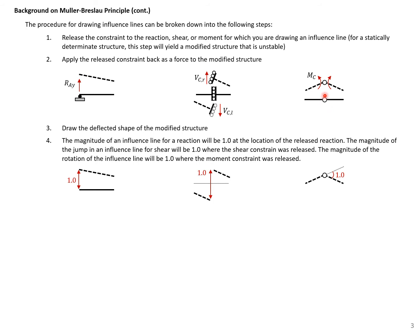For a moment, release the moment restraint by adding a hinge, then add the moment back to the structure. Next, draw the deflected shape of the modified structure after applying back the released constraint. The magnitude of the influence line for a reaction is 1.0 at the location of the released reaction. The jump in the shear diagram is 1.0 when released, and the total rotation at the hinge is 1.0.